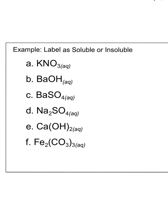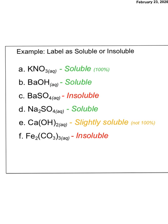So pause the video really quick. I'm going to give you 10 seconds, maybe 15 seconds, and I want you to label as soluble or insoluble. So pause. All right, check your answers. Obviously, you may have had to look at the solubility rules for some of these. But we have KNO3 is soluble, Ba(OH)2 is soluble, BaSO4 is insoluble, meaning it will not dissolve. Na2SO4 is soluble, Ca(OH)2 is slightly soluble, so kind of in between it won't dissolve 100%. And then Fe2(CO3)3 is insoluble, meaning it will not dissolve.